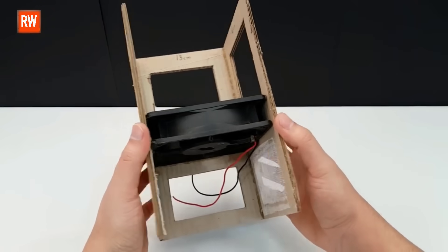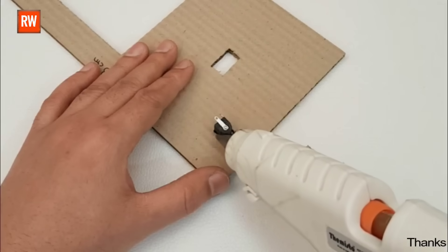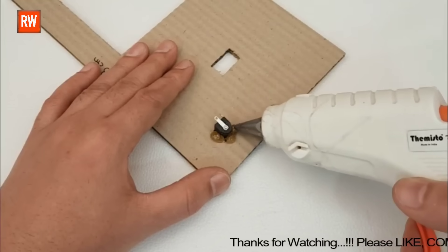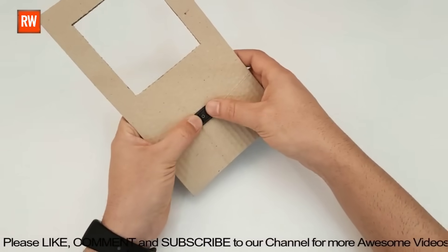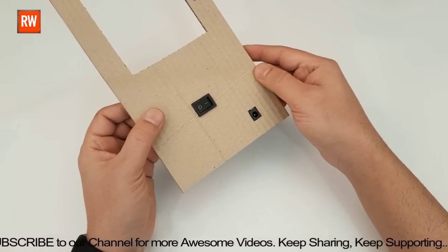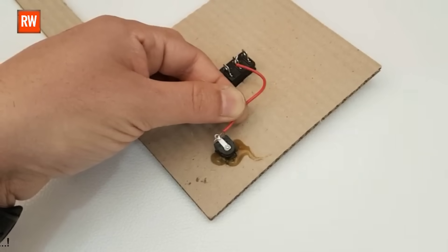Alright friends, now let's move on to the wiring section of the project. In this setup, we've used a female socket, which we've secured in place using hot glue for a firm hold. After that, we install the switch. Once both components are in place, the next step is to use a soldering iron to make clean, secure connections. Proper soldering is important to ensure everything works smoothly and safely.